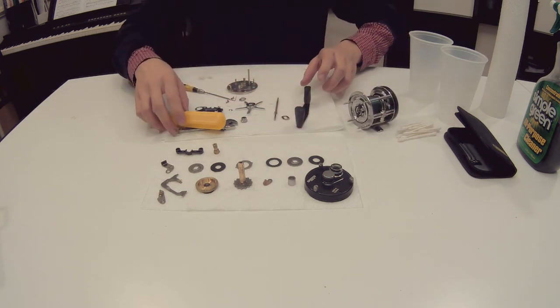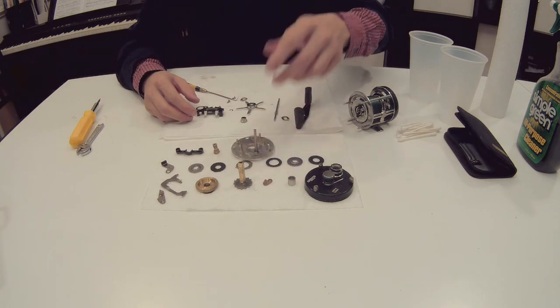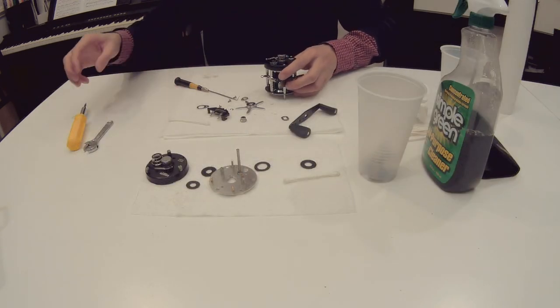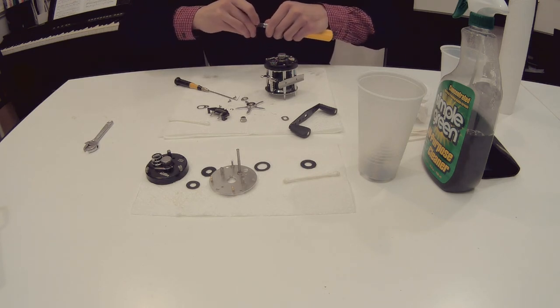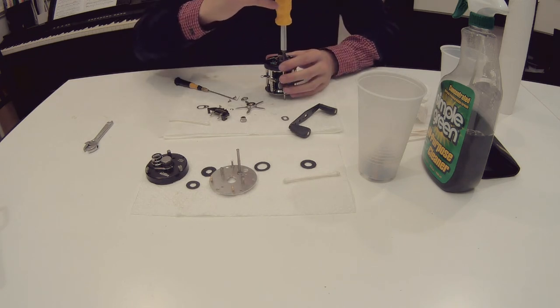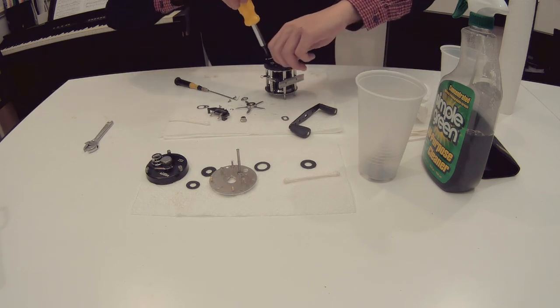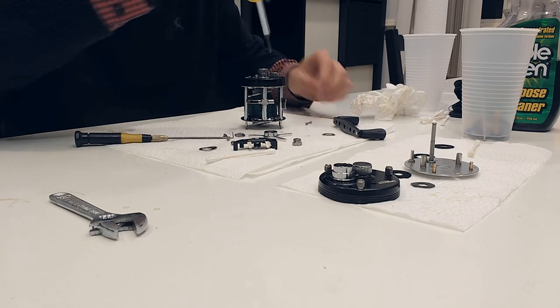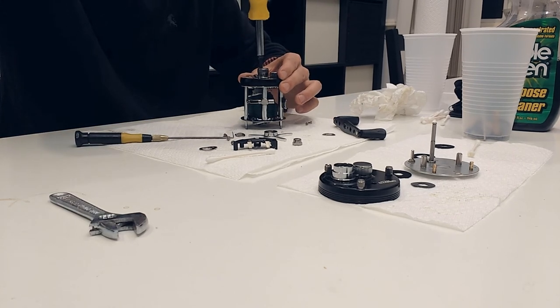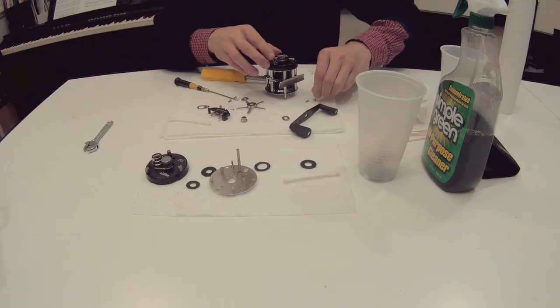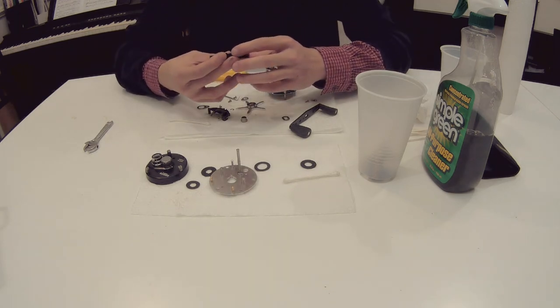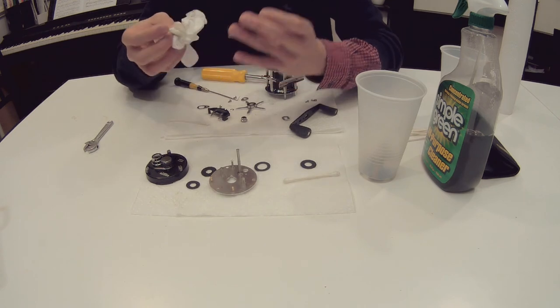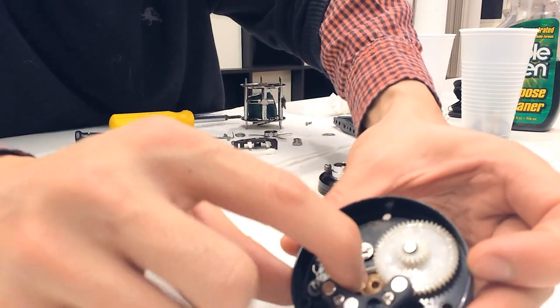Let's see the crank handle side of the reel. Very simple design. Looks just like the ambassador 6500. Then we're going to get to the other side of the reel. It has three phillips head screws holding down this part of the reel. Usually it's pretty greasy in the ambassador series. It's actually not greasy at all. So I don't think we need to clean this part, but we're going to add a little bit of oil to this part.